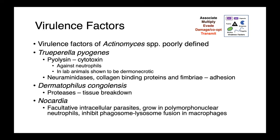Virulence factors associated with Actinomyces are really quite poorly defined — we don't have a good understanding of how these bacteria actually cause disease. For Trueperella pyogenes, we know a little bit more: it produces a pyolysin, which is a cytotoxin active against neutrophils, and in lab animals it's also been shown to be dermonecrotic experimentally. Trueperella pyogenes also produces neuraminidases, collagen-binding proteins, and fimbriae, which all help these organisms adhere to host tissues. Dermatophilus congolensis produces proteases involved in breaking down tissues and invasion into deeper structures. Nocardia are facultative intracellular parasites — they're able to grow within polymorphonuclear neutrophils and inhibit phagosome-lysosome fusion within macrophages, preventing white blood cells from killing the organisms.